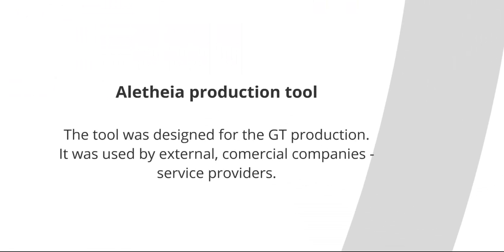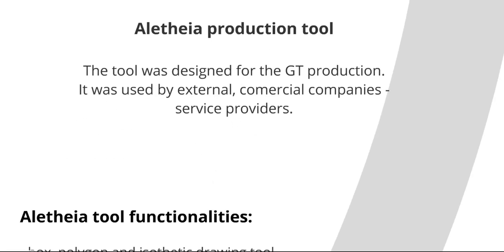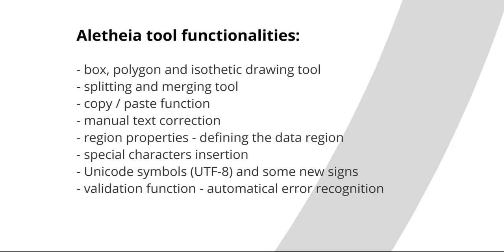For the production of the GT, a special tool, Aletheia, was used. The tool will also be available after the project through the Center of Competence webpage. The Aletheia tool was designed with multiple functionalities to enable fast and adequate GT production. It can be used in the production and correction of metadata for digital images, in post-correction of digitized and OCR materials, and much more.